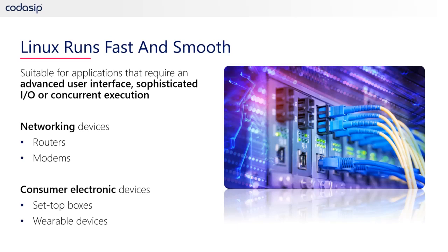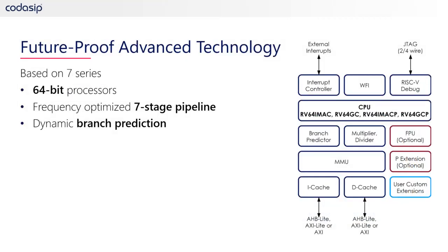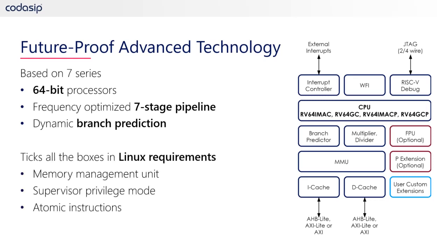Philip, we discussed the operating system hardware requirements in the last blog. Can you quickly remind us what exactly we are talking about? The 7 series cores from CodaSIP are currently the processors with the most complex microarchitecture in the portfolio. They are 64-bit processors with a 7-stage pipeline to allow for high frequencies, and with features like dynamic branch prediction for maximum performance. Additionally, these processors come with all the features necessary to run Linux, such as the memory management unit, advanced privilege modes, and atomic instructions.